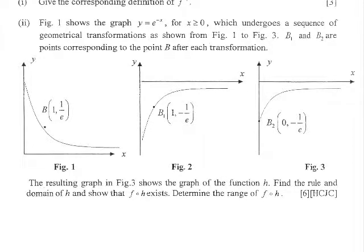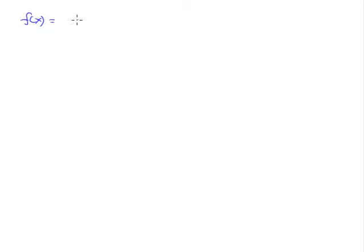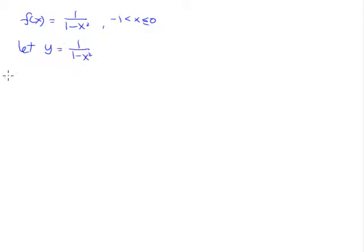First thing, we have to scroll down a little bit. Now what we have is an f(x) that looks like this: 1 over 1 minus x squared, for the domain of negative 1, excluding 1, to 0, including 0. So this is our function. To find the inverse, it's not difficult at all. We just let y equals 1 over 1 minus x squared. Cross multiply, or just reciprocate both sides — we have 1 minus x squared equals 1 over y.